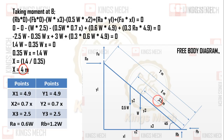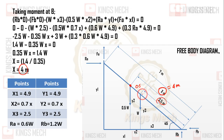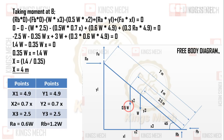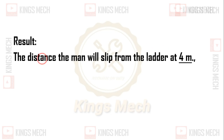After completing the calculation, we get x equals 4m. The center of gravity is at 3.5m. So the man will be at 4m from the bottom along the ladder when the ladder is about to slip. The distance the man can climb before the ladder slips is 4 meters.